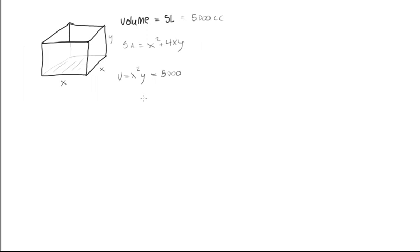It's easier to do this because then we'll get dimensions in centimeters when we work through this. So let's just isolate y. y is equal to 5,000 over x squared. We could isolate for x but we'd have square roots and stuff, so it's just easier to isolate the y here.